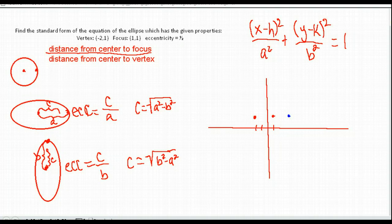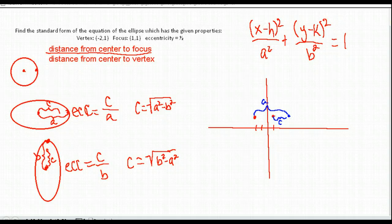We can see we have a horizontal ellipse. The distance from our center to the vertex is A and to the focus is C. Our center is (something, 1) because the y-values are not changing — only the x-values are.